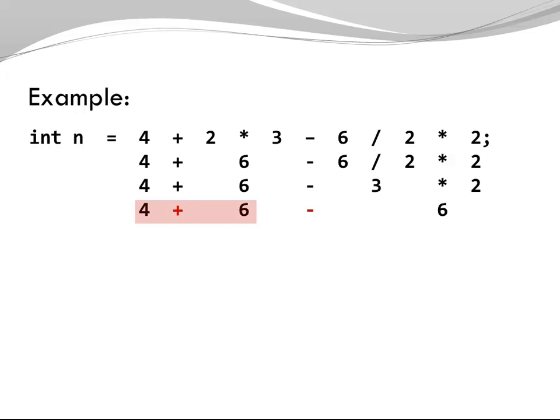We're moving on to the second level of operators, which is plus and minus. So I'm going to do the left one first, 4 plus 6, this is 10, and 10 minus 6, this is 4. And so, my integer variable n gets assigned the value 4.